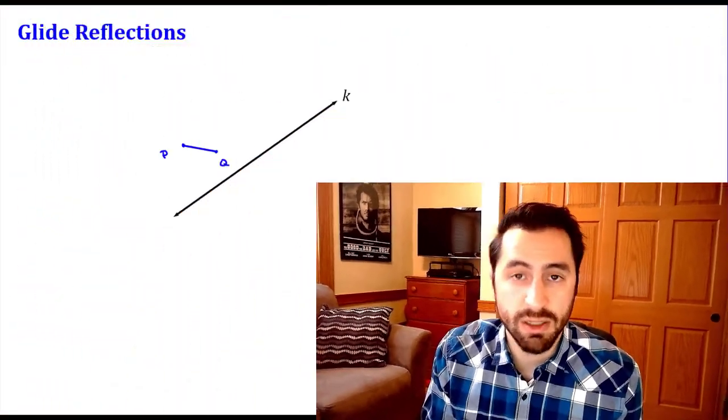In this video we're going to be taking a look at glide reflections. A glide reflection is a composition of two transformations — it's a combination of a translation followed by a reflection. We're going to take an object, translate it somewhere, and then flip it over a line.